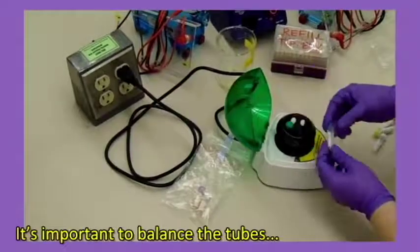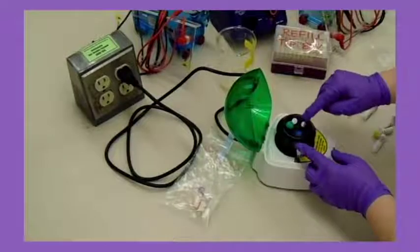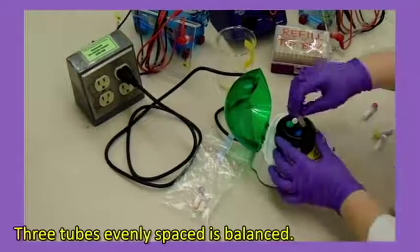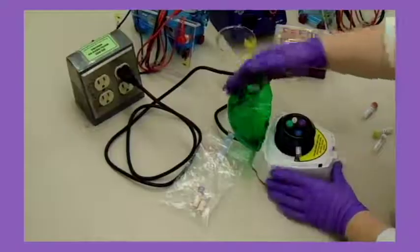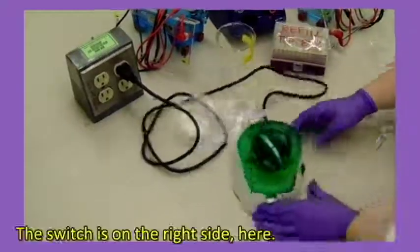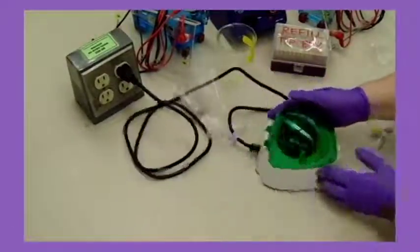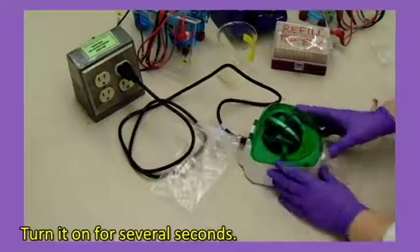It's important to balance the tubes in the microcentrifuge. Three tubes evenly spaced is balanced. The switch is on the right side here. Turn it on for several seconds.